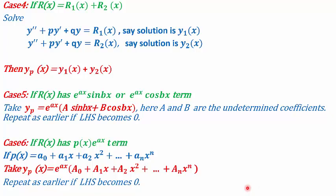The fourth case: what if the right-hand side r(x) is a sum of two functions r₁(x) + r₂(x)? We split the differential equation into two parts. The first equation y'' + py' + qy = r₁(x) has a solution y₁, and the second y'' + py' + qy = r₂(x) has a solution y₂. Then yp = y₁(x) + y₂(x).